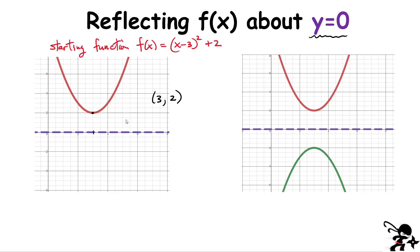If I wanted to reflect it, I simply measure how far that point is from the axis of symmetry — in this case it's two units. All I do is go in the opposite direction to reflect that point, placing it here. The reflected point has the same x value; the only thing I change is the y value, and I change it to the negative y value.